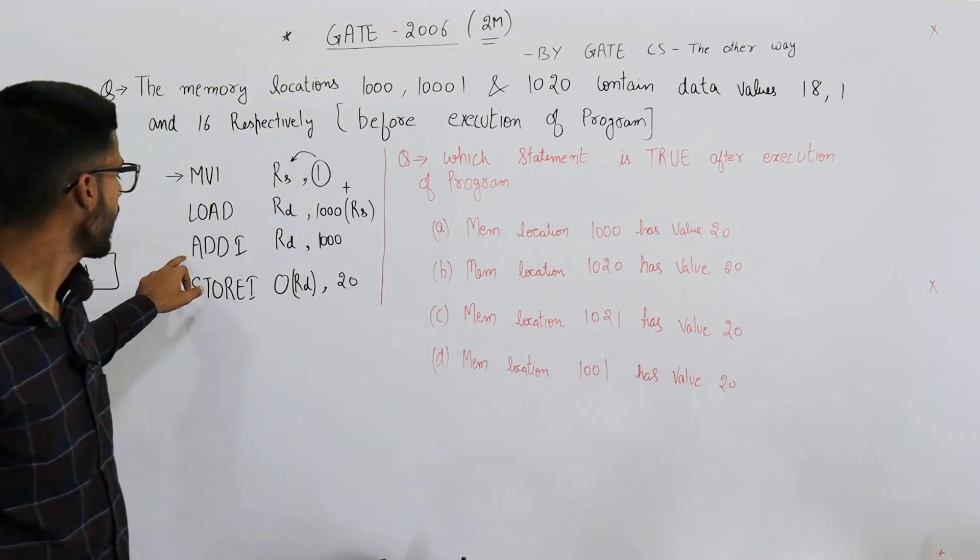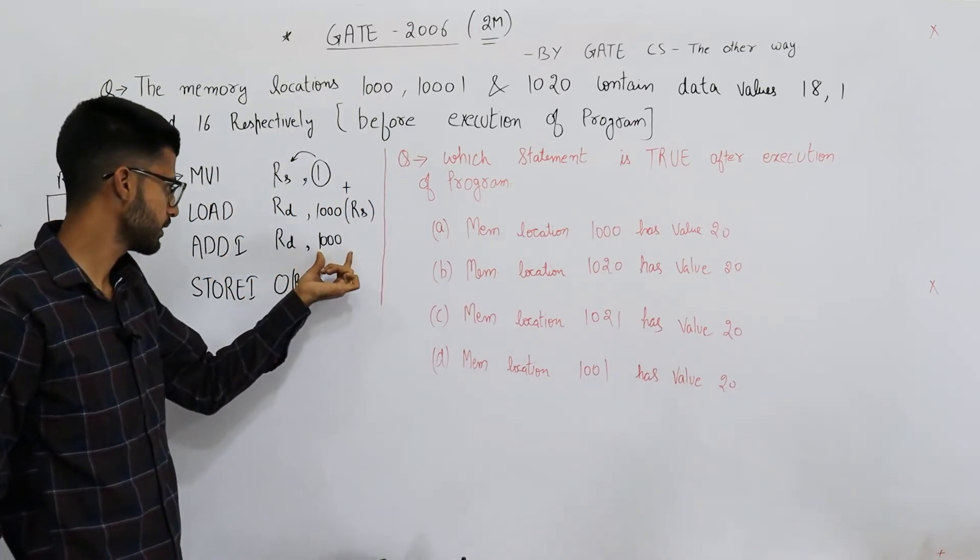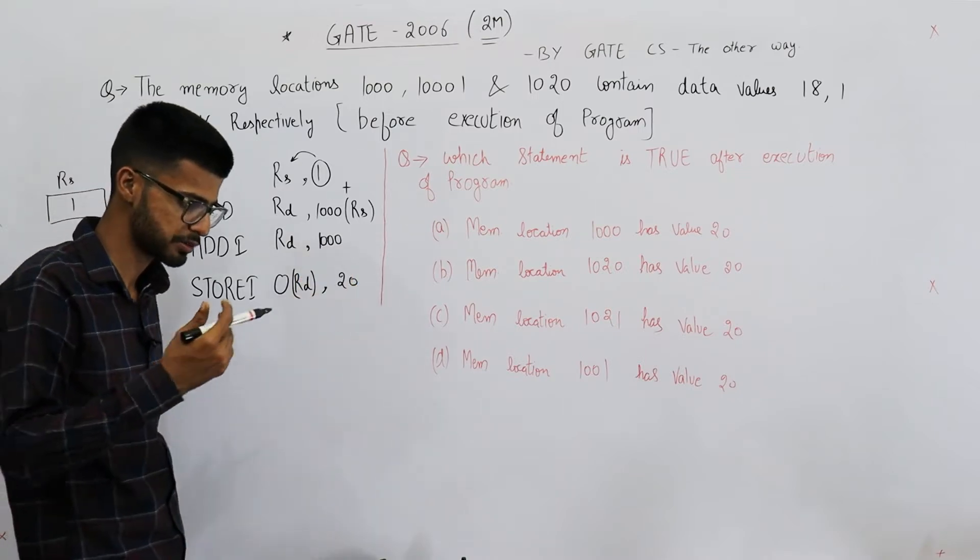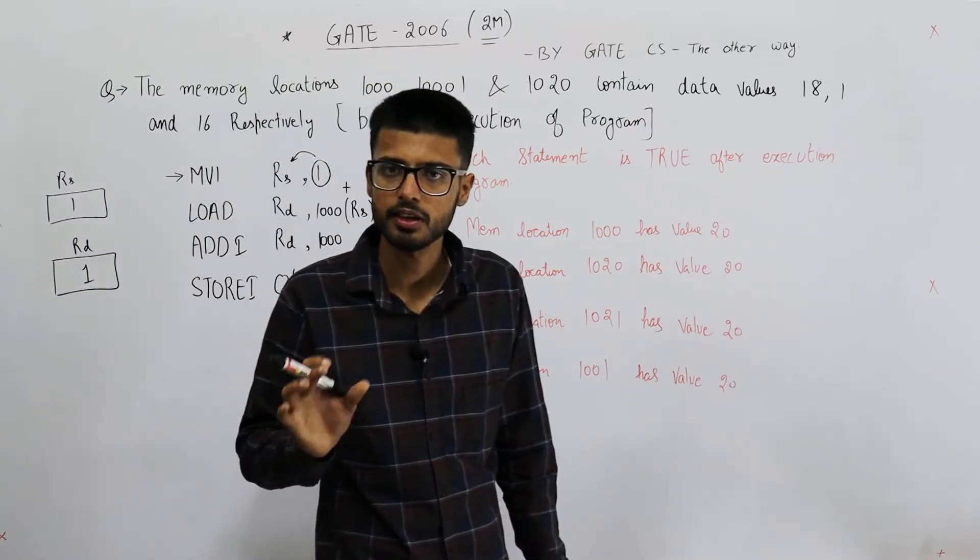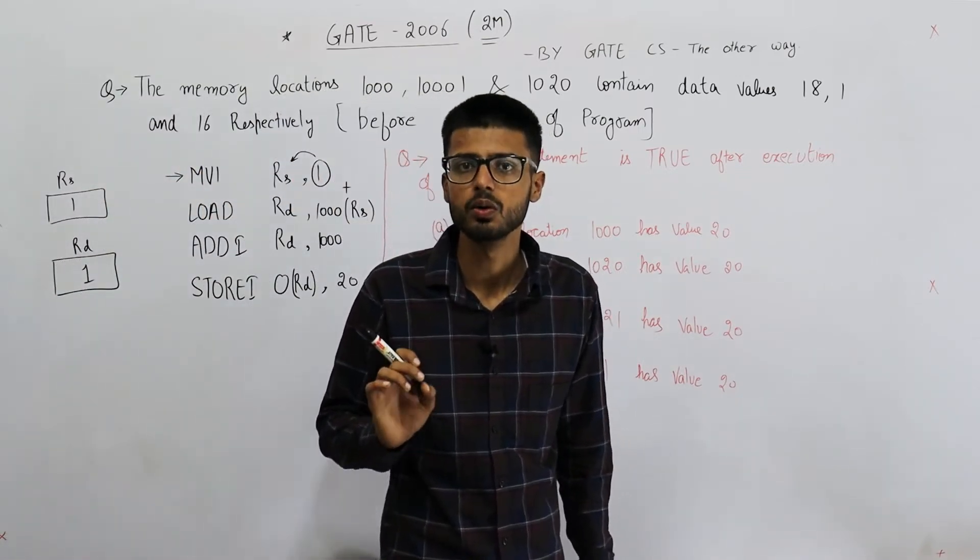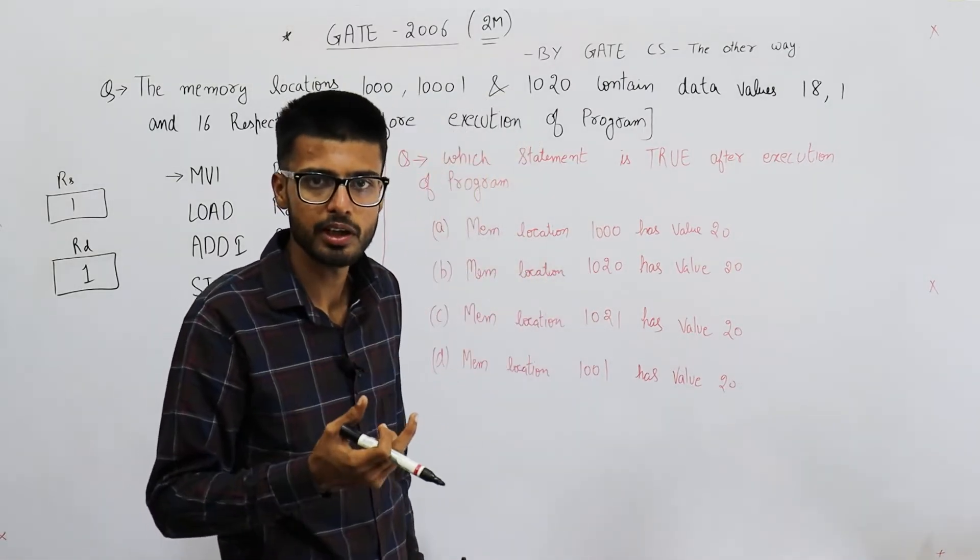The third line is ADD immediate. Immediate means whatever we have supplied here, whatever we have specified in the instruction, is the data. We don't need to look for the data in memory.